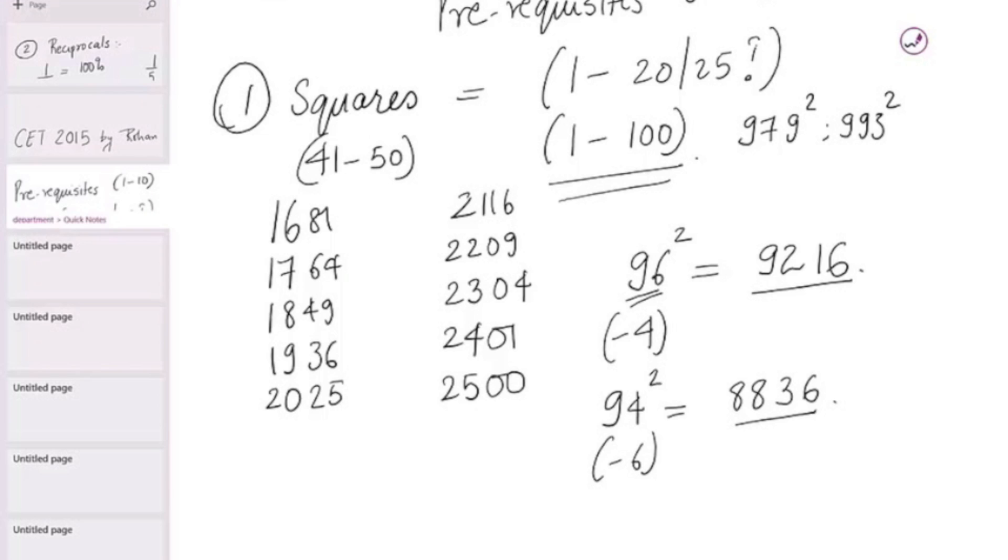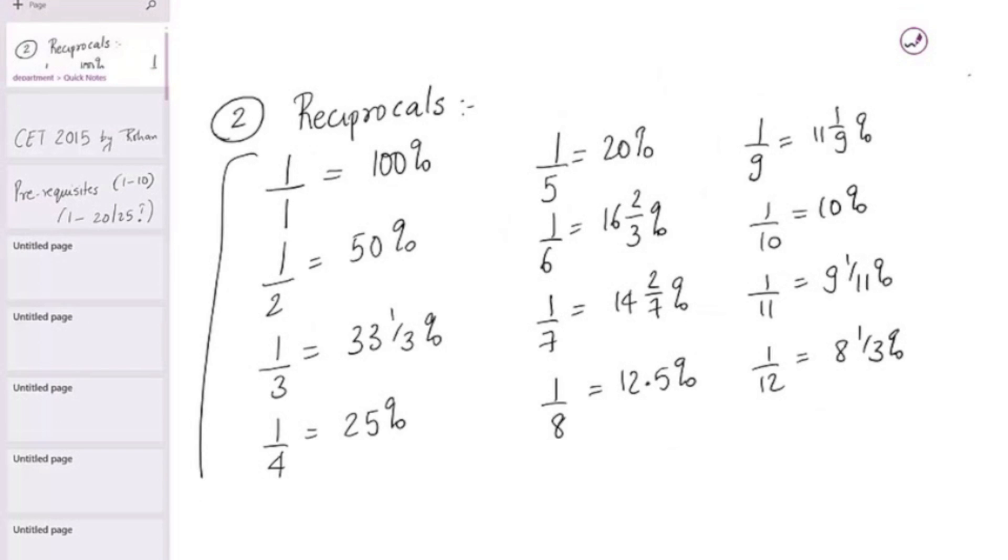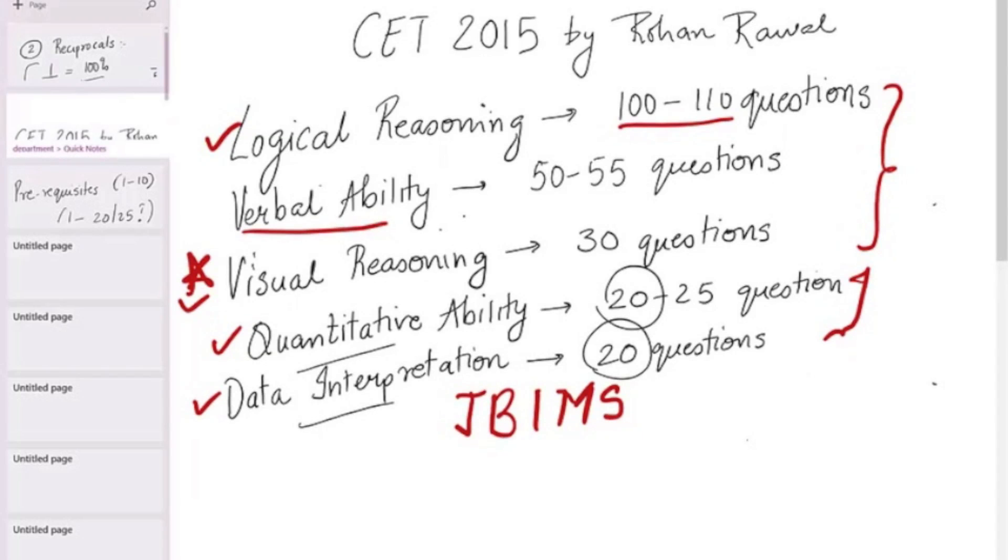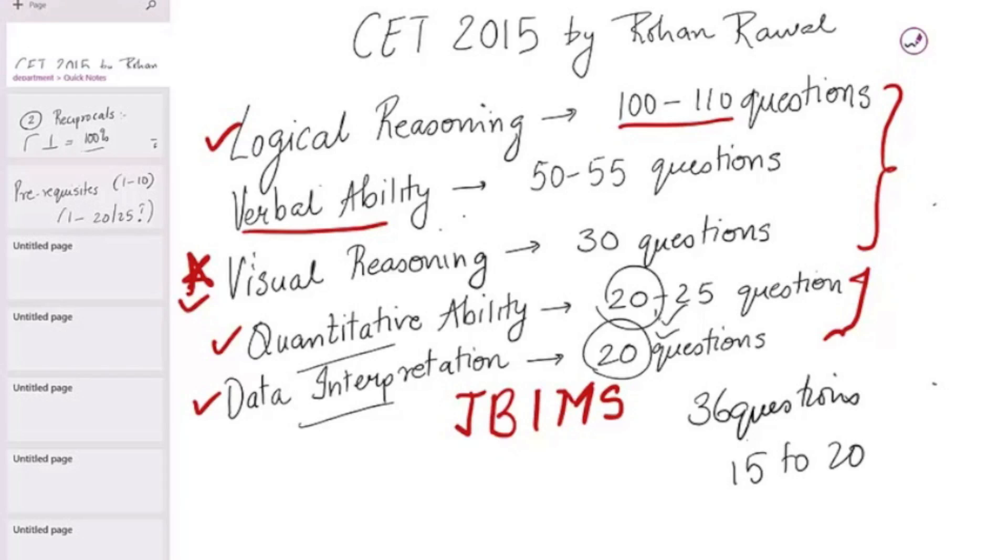Alright, so these were squares. The next prerequisite of CET is one of my favorite topic which is reciprocals. Have a look at these 12 reciprocals. You may pause this video out here and just take a note of all these 12 numbers. 1 by 1 to 1 by 12. So, let's quickly go through this. 1 by 1 is 100. 1 by 2 is 50. 1 by 3 is 33.1 by 3. 1 by 4 is 25. 1 by 5 is 20. 1 by 6 is 16.2 by 3. 1 by 7 is 14.2 by 7. 1 by 8 is 12 and a half. 1 by 9 is 11.1 by 9. 1 by 10 is 10. 1 by 11 is 9.1 by 11. 1 by 12 is 8.1 third. If you know these 12 numbers thoroughly, I'll help you solve 90% of the questions of these two areas, quant and DI which is around 36 questions in a matter of 15 to 20 seconds per question.